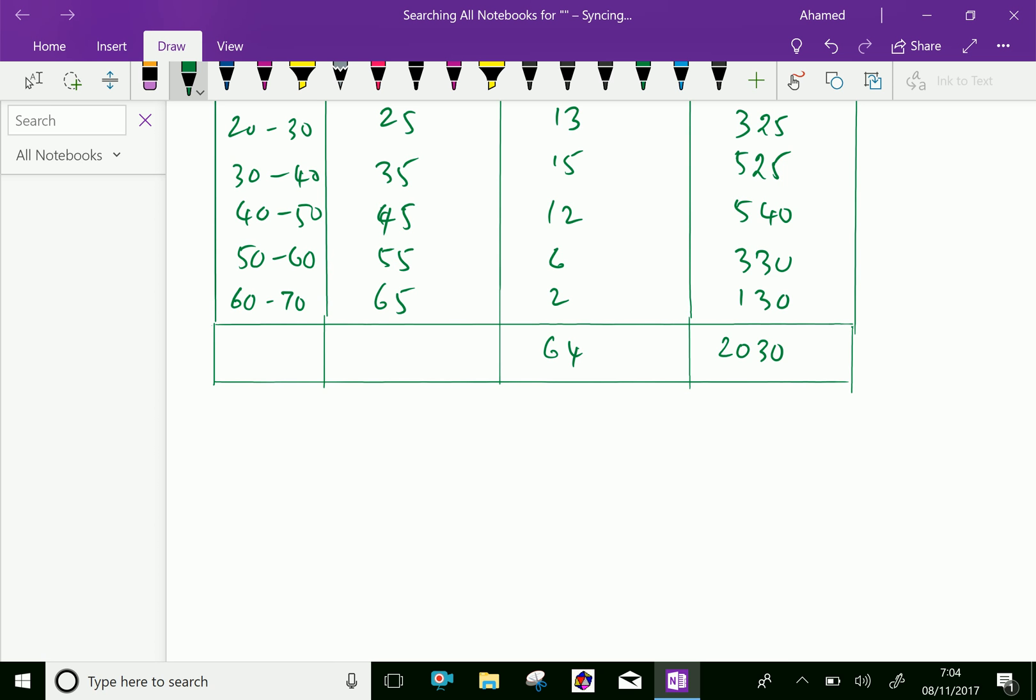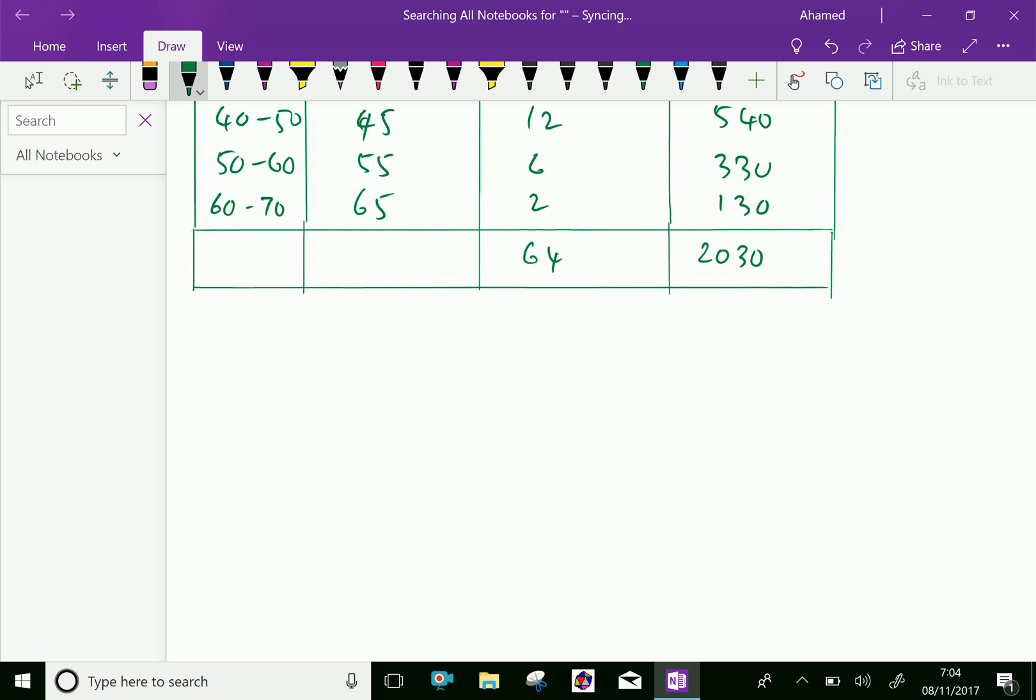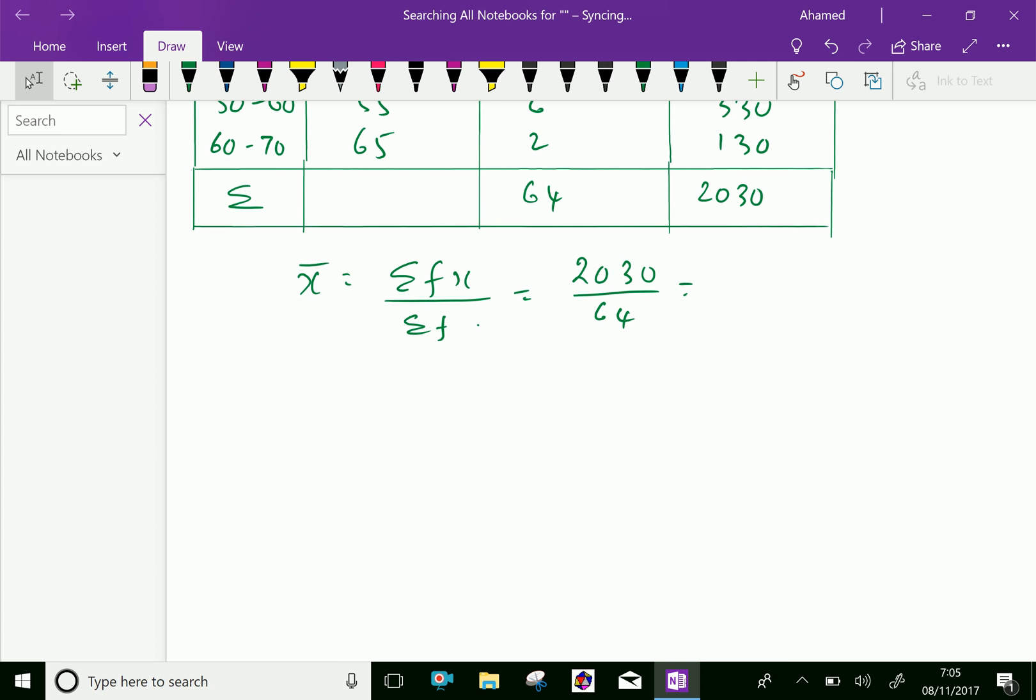Now, let us use the formula of x̄. That is, arithmetic mean equals sigma fx over sigma f. This is 2030 over 64. Let us calculate this: 2030 over 64 equals 31.72.